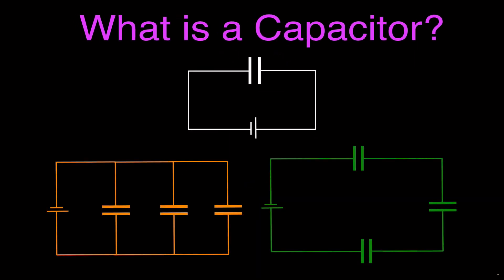When you see a capacitor in a schematic diagram, it looks like this. The capacitor has parallel lines of equal length — you can tell it's a battery or voltage source because those lines are different lengths. You can have capacitors in parallel, where these are in parallel to each other, and these capacitors are in series to each other. Of course you can also have combinations with both series and parallel capacitors together. That's what a simple schematic looks like: three capacitors hooked up to a battery in parallel, and three capacitors hooked up in series.